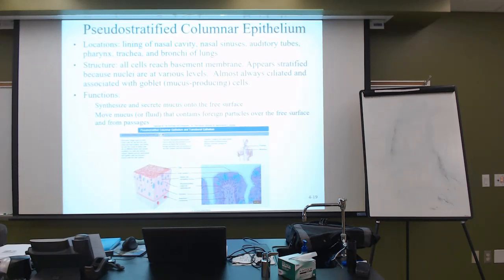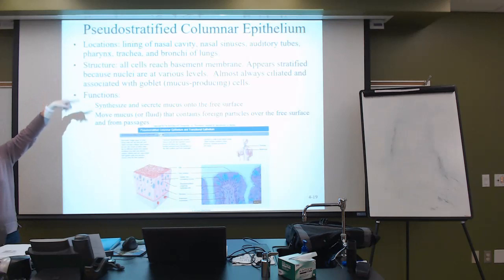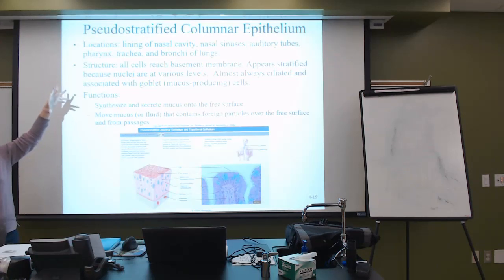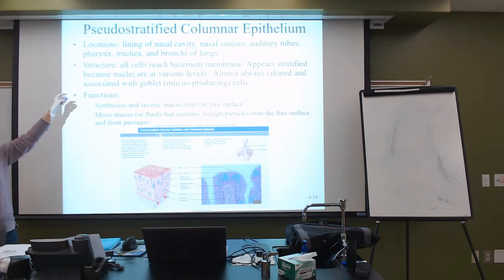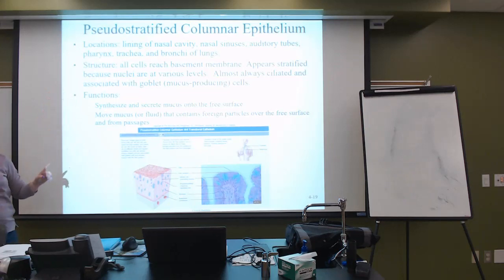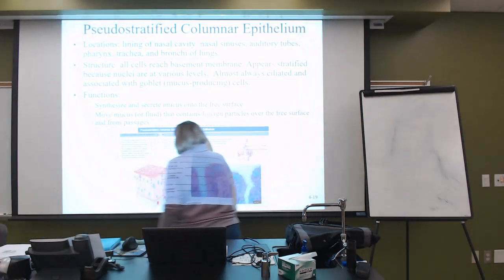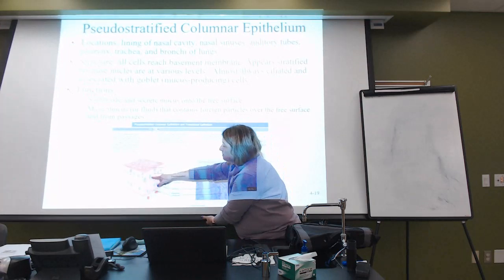Pseudostratified columnar epithelium is where it looks like there are two or more cell layers. It is found lining the nasal cavity, nasal sinuses, auditory tubes, pharynx, trachea, and bronchi. Notice how the cells have gone from where we saw the simple epithelium, for example all the way at the terminal bronchiole, then up to a bronchiole, and now up to the bronchi.